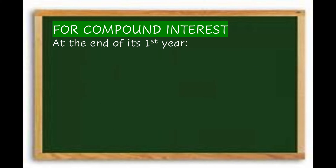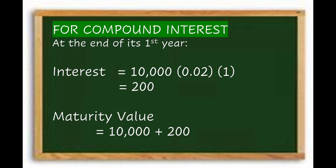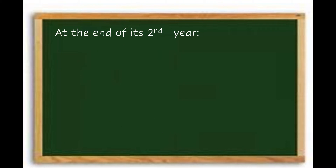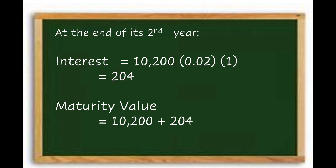Next, we compute compound interest. At the end of the first year, the interest is ₱10,000 × 0.02 × 1 = ₱200. The maturity value is ₱10,000 + ₱200 = ₱10,200. At the end of the second year, the principal is now ₱10,200 because the previous year's interest is added. So ₱10,200 × 0.02 × 1 = ₱204. The maturity value is ₱10,200 + ₱204 = ₱10,404.